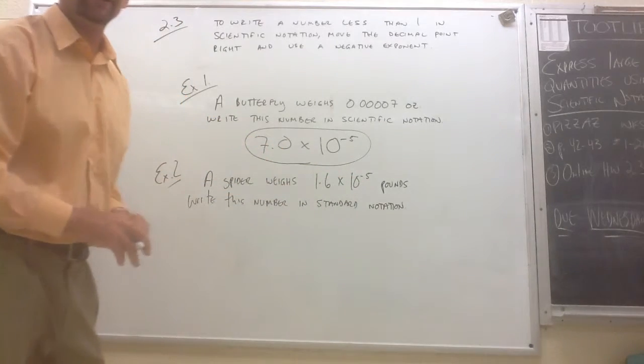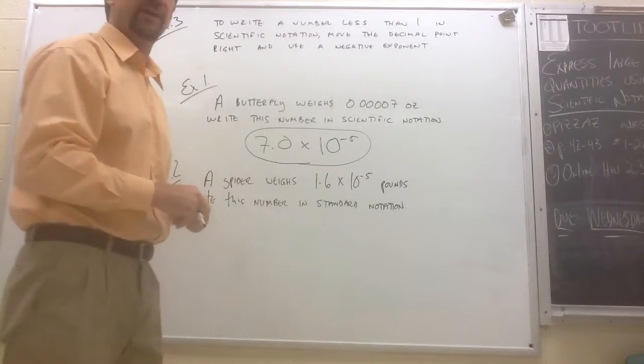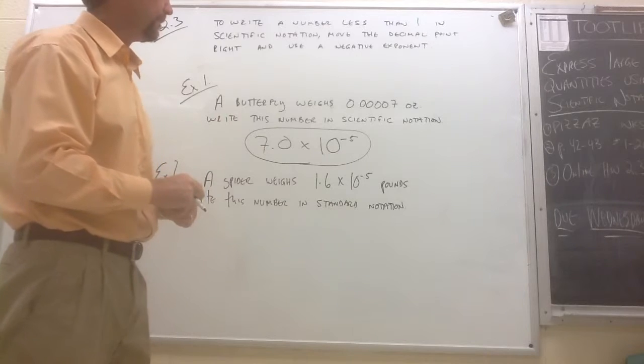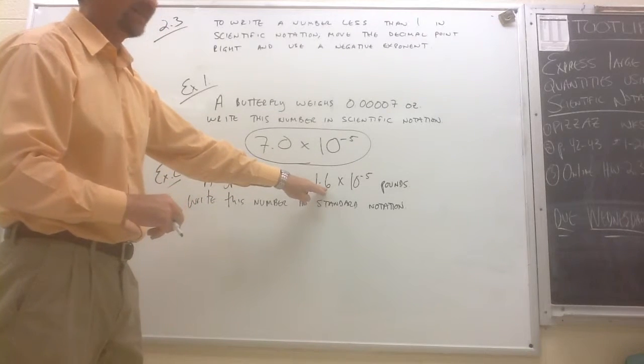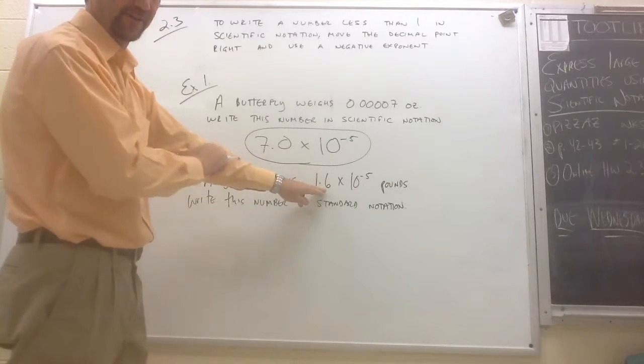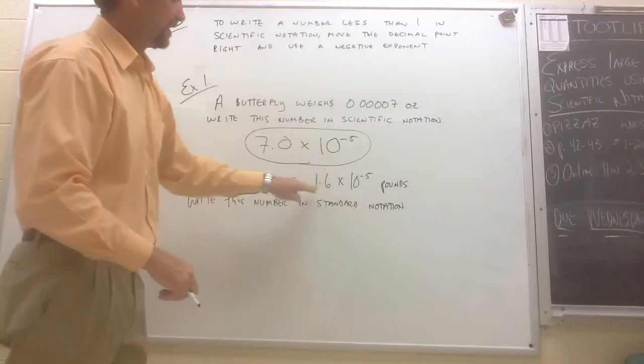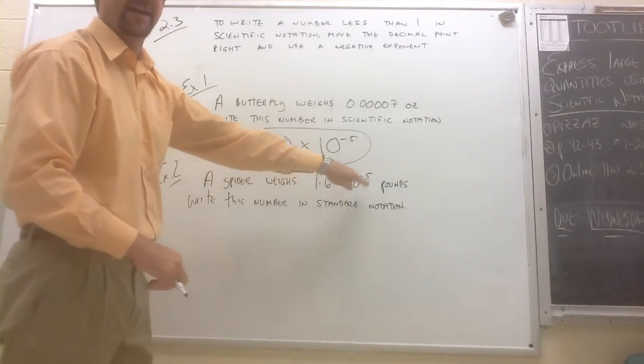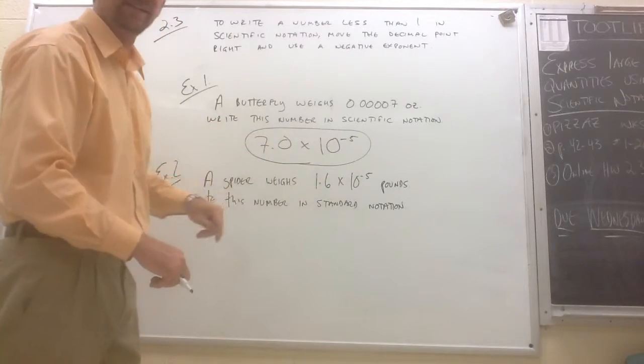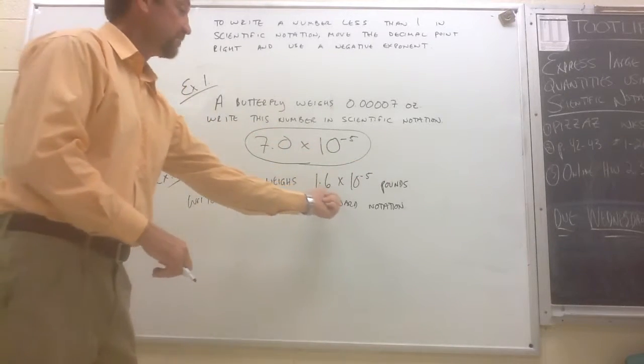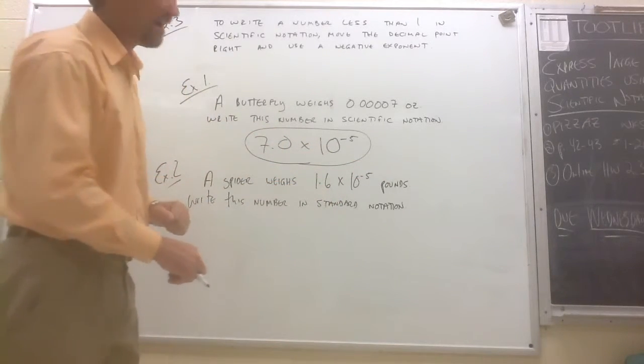Now remember, when you see a negative exponent, you know that you're dealing with a number that's less than one. So we're going to need to move this decimal point to the left, not to the right, because that would give us 16,000 or 160,000 if we were to go this way. So we're moving our decimal five places to the left.